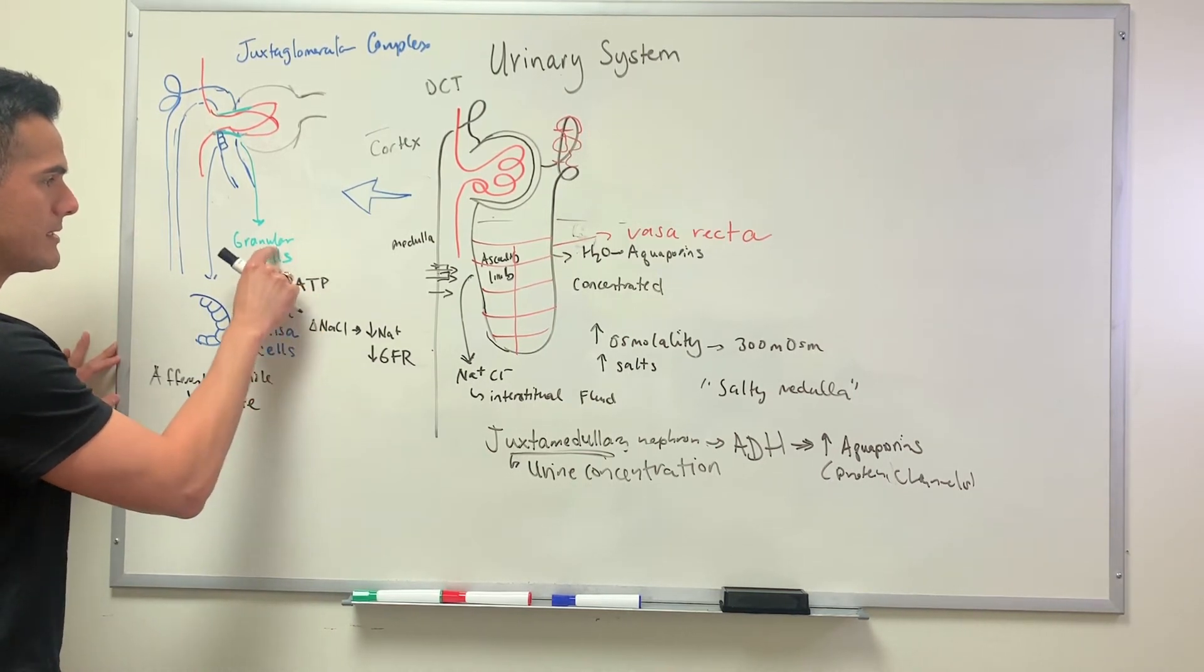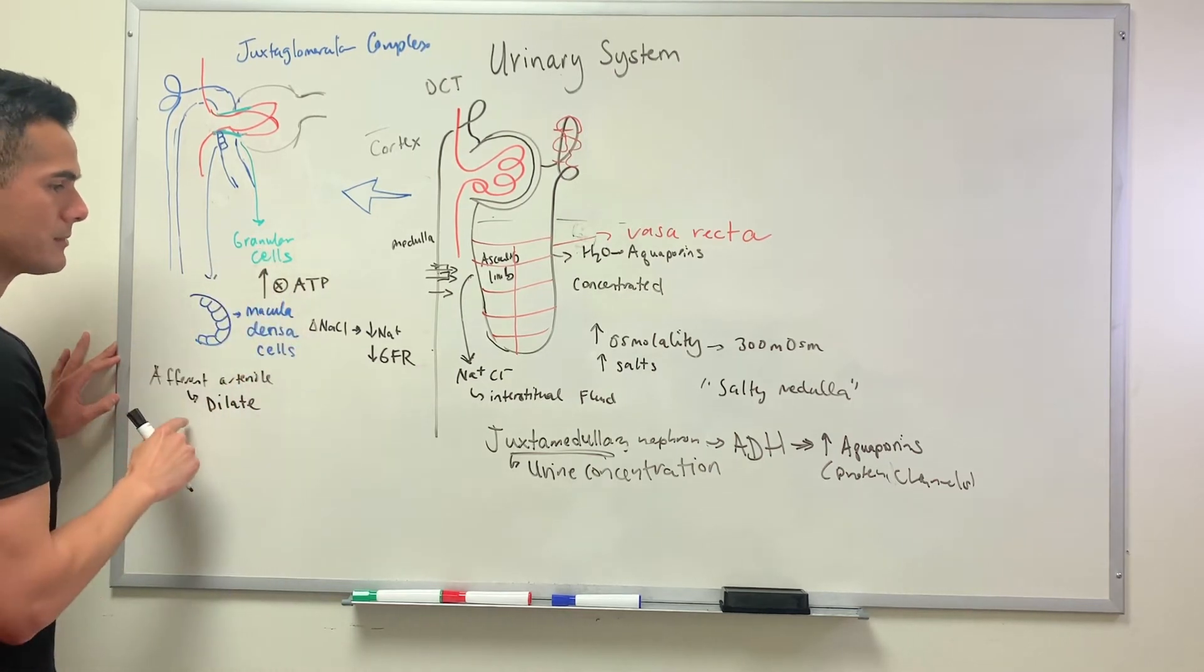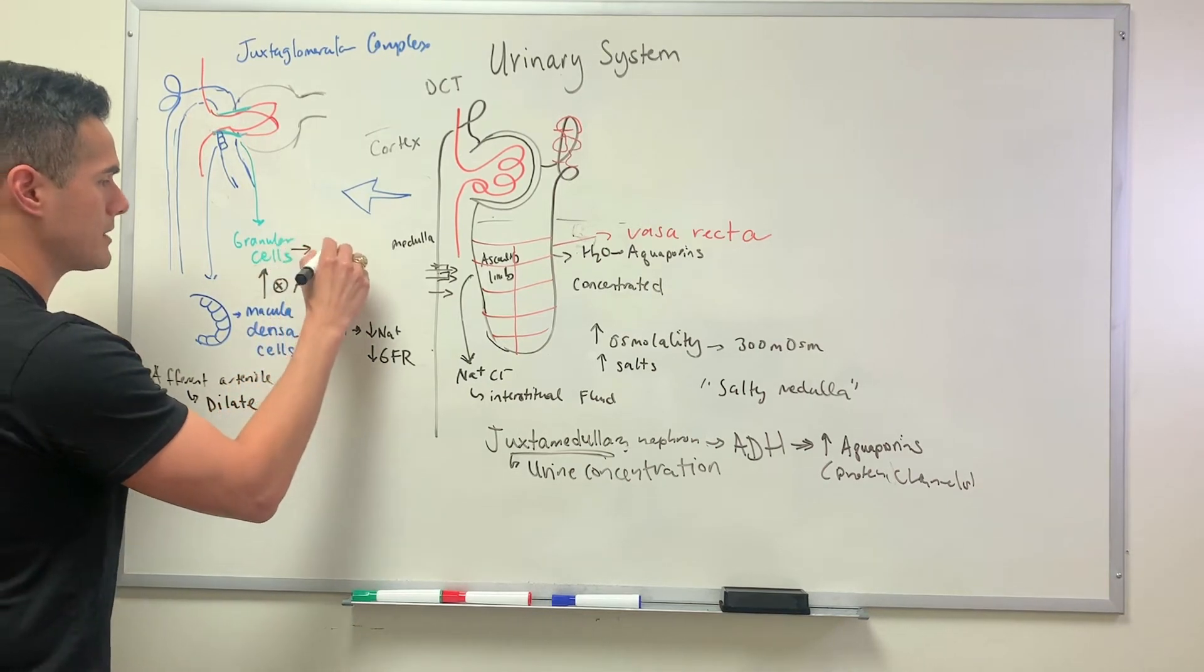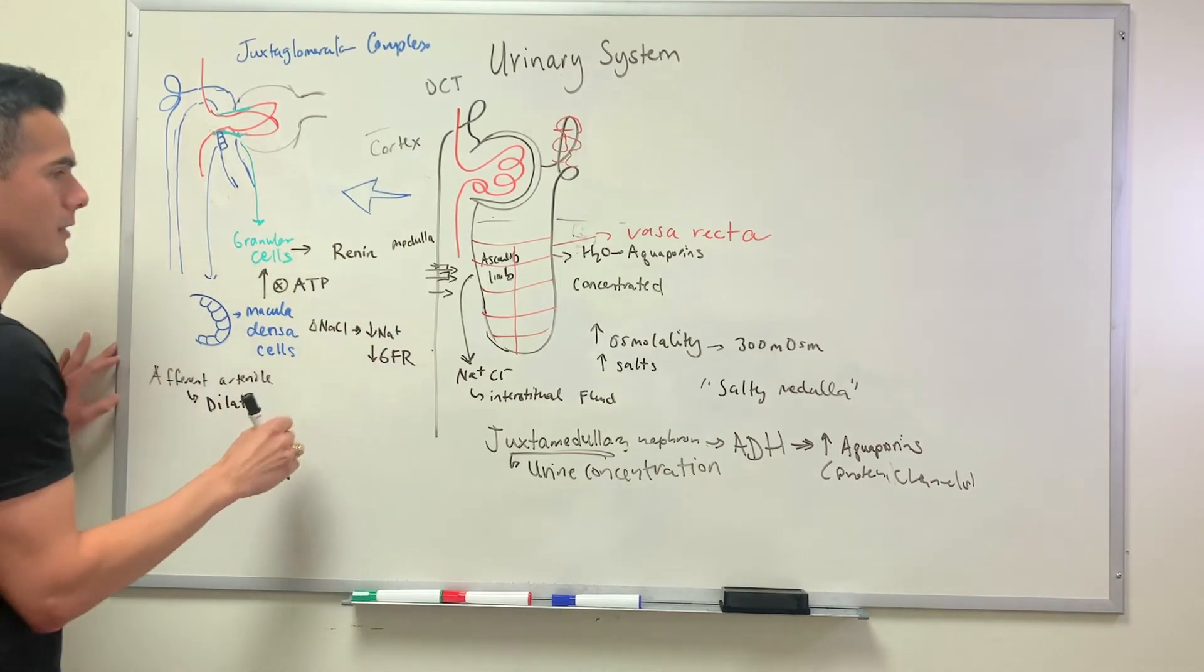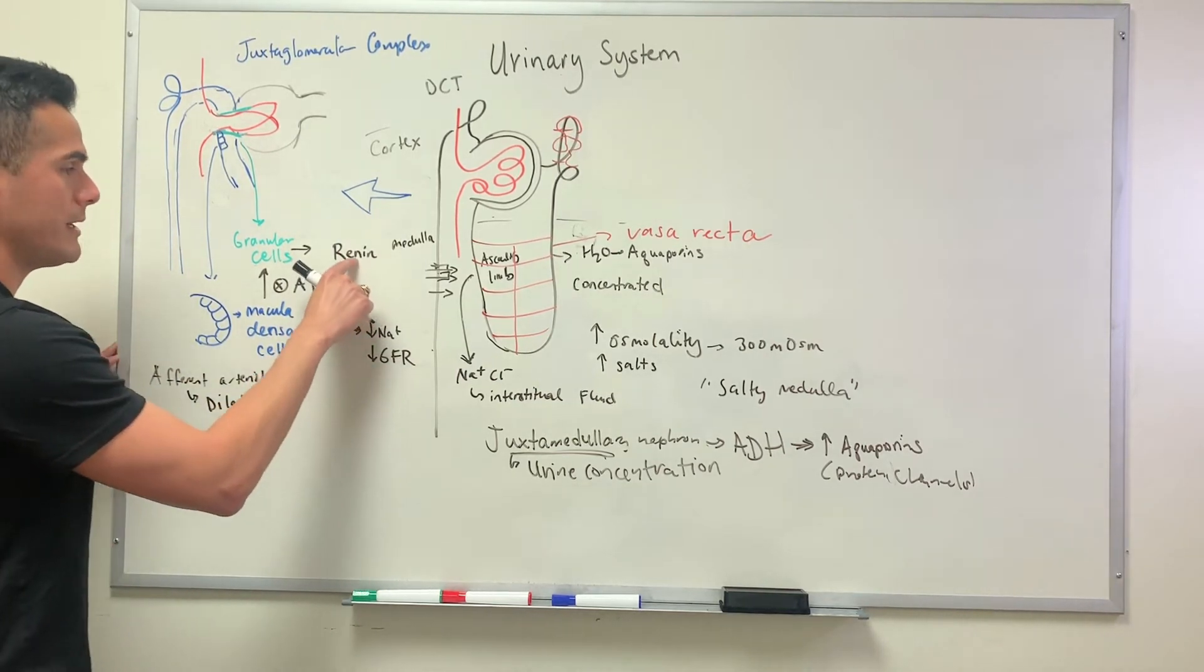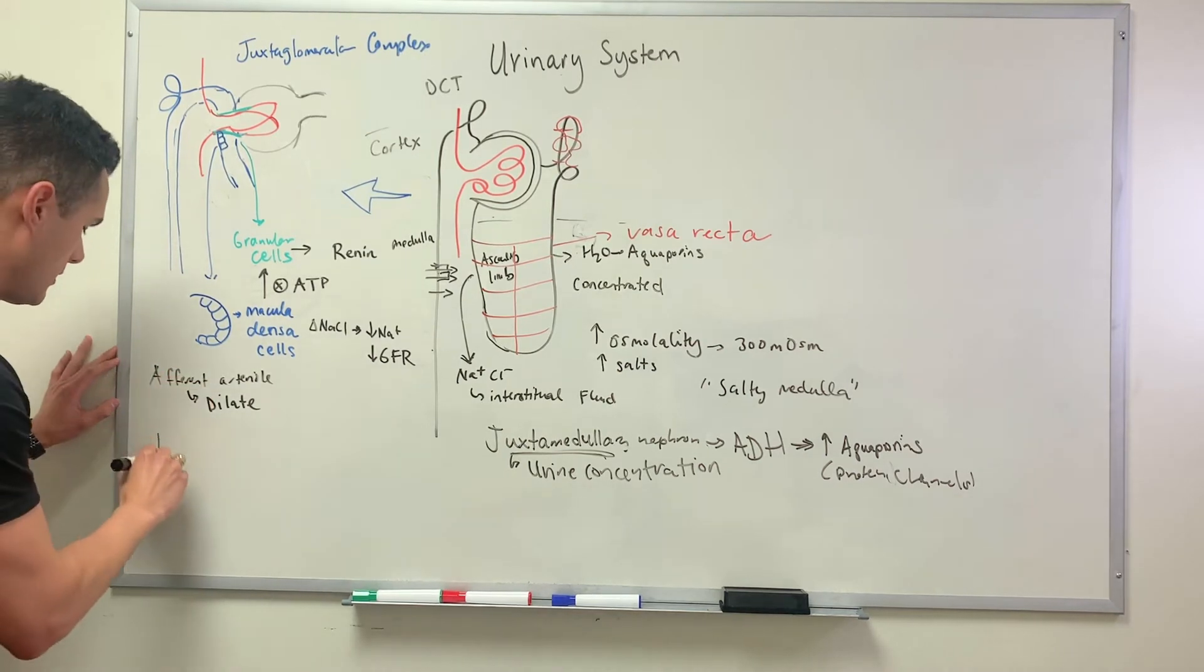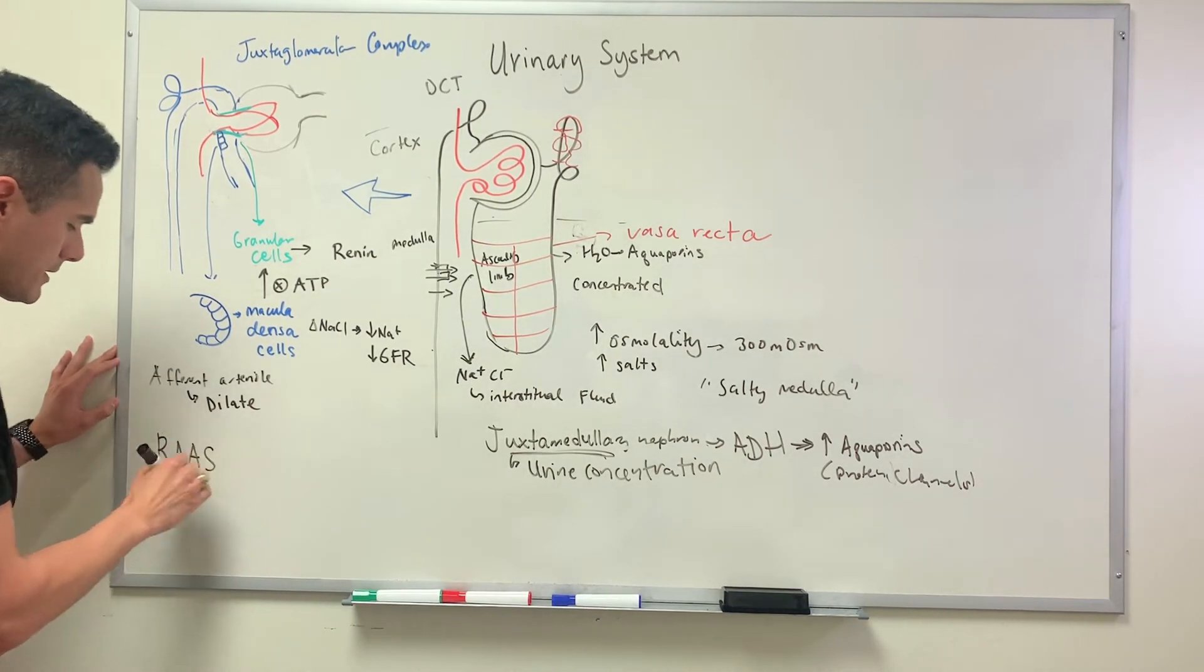When the inhibition of ATP doesn't reach the granular cells, the granular cells secrete what's known as renin. Renin activates a cascade of events known as the renin-angiotensin-aldosterone system.